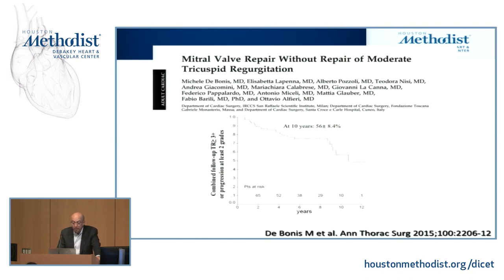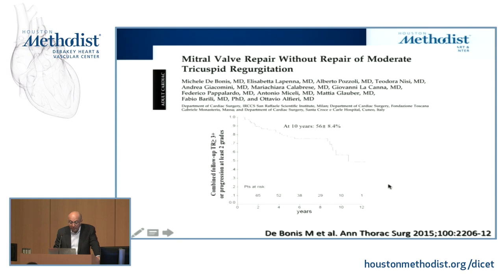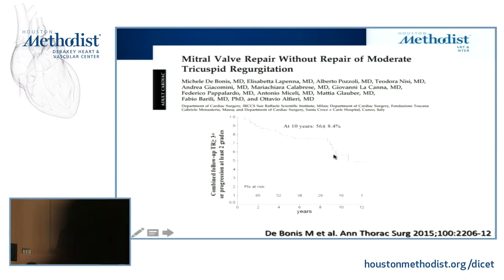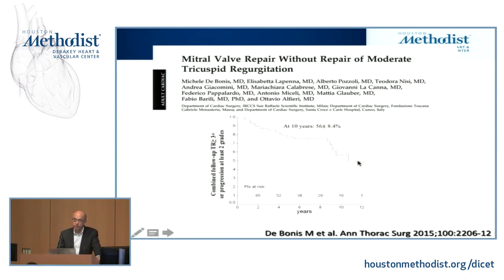Another paper from 2015 suggested that if you didn't repair the tricuspid valve at the time of left-sided surgery, by 10 years more than 50% of patients would have a worsening of tricuspid regurgitation grade by at least 2 grades.